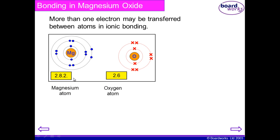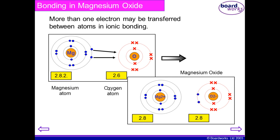Magnesium is found in group two because it has two electrons in its outer shell, and oxygen is in group six and has six electrons in its outer shell. In order for magnesium to form an ion, it needs to lose those two electrons, and for oxygen it needs to gain them. So what happens is they exchange the electrons and they now end up as ions.